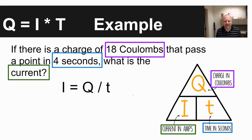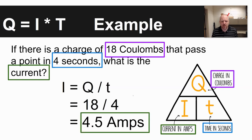The equation that you use for this is I is equal to Q divided by T because we're solving for current. Looking at that triangle, if you cover the I, you have Q atop T. Plug in the values that are given, 18 and 4. You come up with an answer of 4.5 amps.